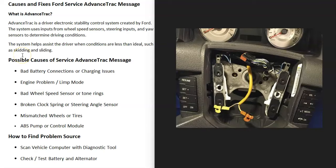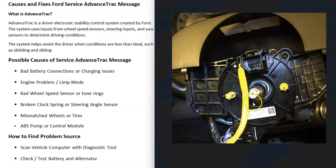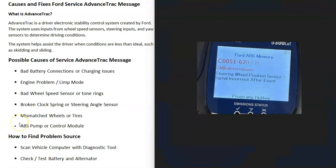Another thing that could cause this is a bad clock spring or steering angle sensor, which are located up inside the steering wheel. When these go bad, you won't be able to engage cruise control. If you turn on your blinker and turn, after straightening the steering wheel, the blinker won't automatically shut off — those are common symptoms of a bad clock spring. You'll get codes pointing to this, for example C0051 for steering wheel position sensor.